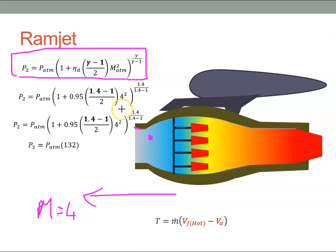I've just taken an example here. I've assumed an efficiency of 95% and we've assumed the Mach number is 4. And when I put all those values in, I get a value of 132. So the pressure at this point is 132 times what it is out here at atmospheric.